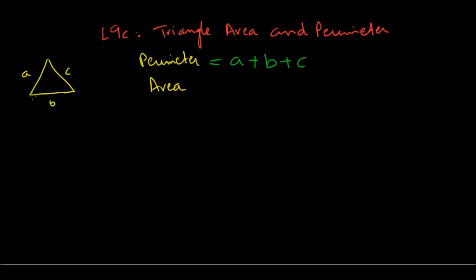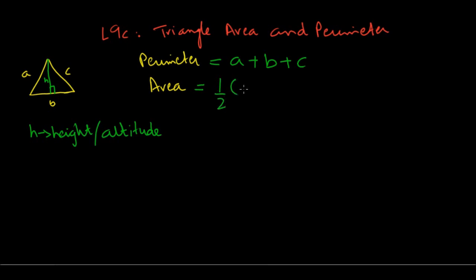For area, you need to draw the height. The height is a line segment drawn from one vertex to the opposite side such that the angle formed is 90 degrees. This is known as h, the height, also called the altitude of the triangle. Once you know this height, the area is one-half times height times the length of the base — the side on which you drew the height, in this case B.